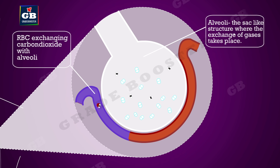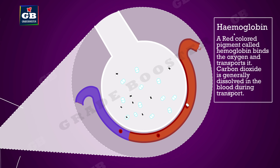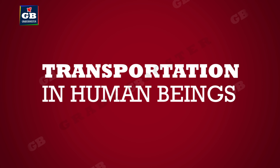The blood brings carbon dioxide from the rest of the body for release into the alveoli. The air in the alveoli is rich in oxygen. The exchange of gases takes place between alveoli and blood by simple diffusion. A red-colored pigment called hemoglobin binds the oxygen and transports it. Carbon dioxide is generally dissolved in the blood during transport.